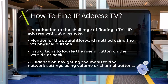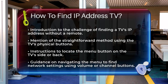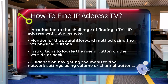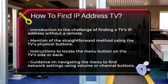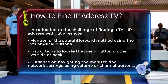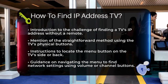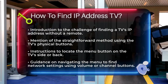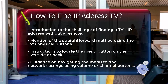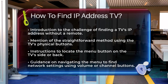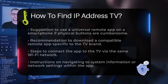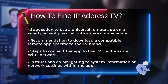First, let's start with the most straightforward method: using the TV's physical buttons. Most modern TVs have buttons on the side or back, such as a menu button, power button, and volume controls. Press the menu button to open the TV's menu options on the screen. Use the volume or channel buttons to navigate through the menu until you find the network settings. Here you should be able to see the IP address of your TV.